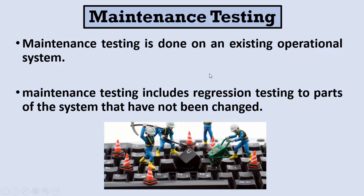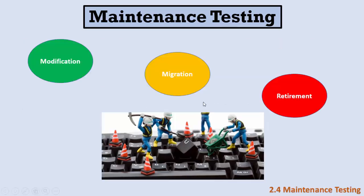We perform regression testing under two conditions: when the software changes or when its environment changes. There are three causes for maintenance testing. The first is modification — when I modify my system, when I change parts of it, I have to perform maintenance testing.